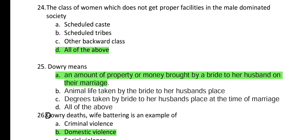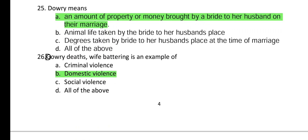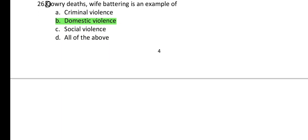Question 25: What does dowry mean? Answer A — an amount of property or money brought by a bride to her husband on their marriage. Question 26: Dowry debts and wife battering are examples of domestic violence.